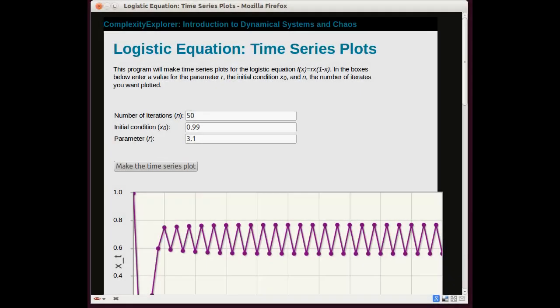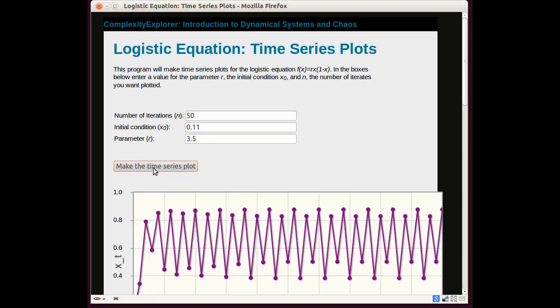Let's experiment with one more r value. Let's try, instead of 3.1, 3.5. And I'll choose an initial condition, I don't know, 0.11. So if I make the time series plot, again we see periodic, cyclic, regular behavior.